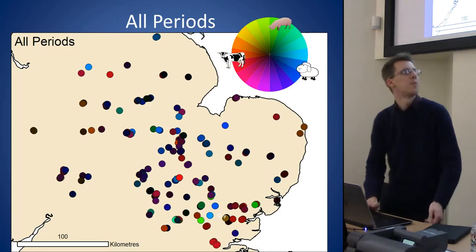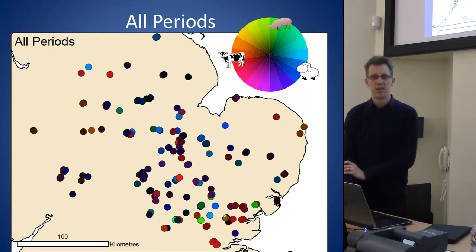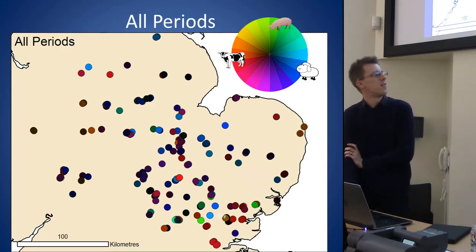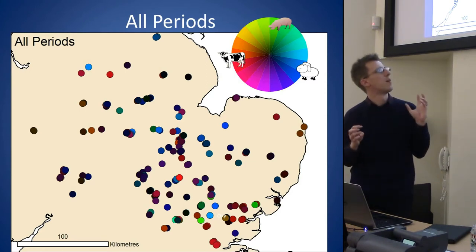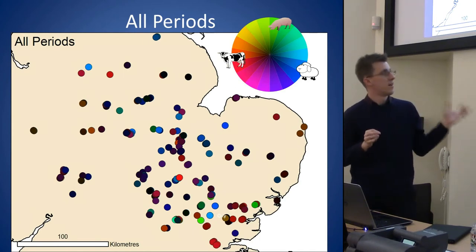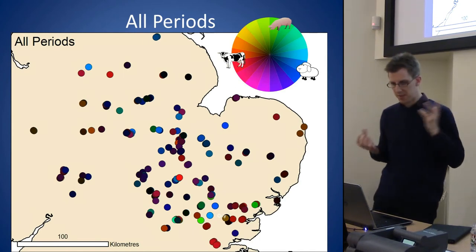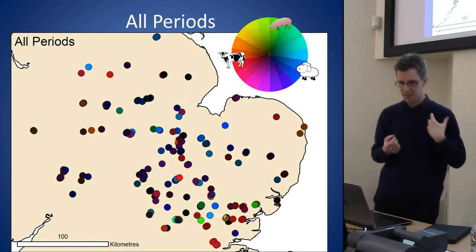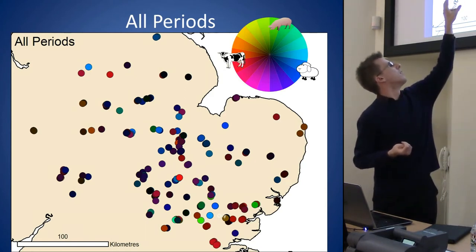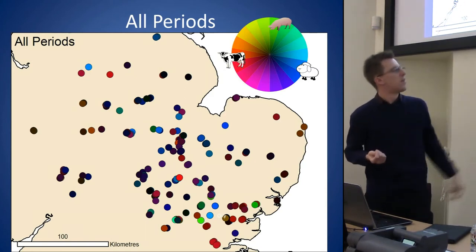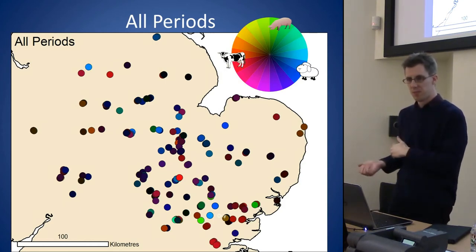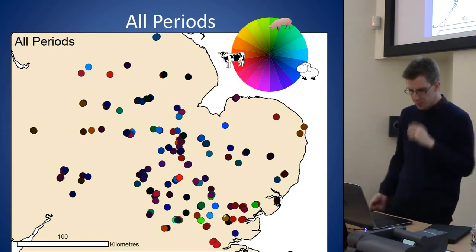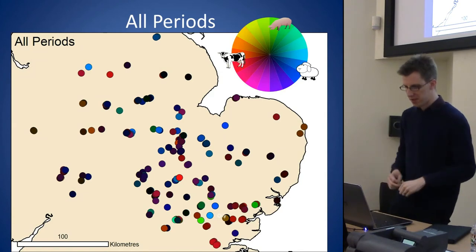That's what happens when I plot the 249 assemblages with the colours they come out with. It comes out as a bit of a mess to start off with: you can see some patterns, there's quite a bit of blue in the middle, and down towards the bottom there's some red showing more cattle towards the south, more sheep in the middle — but it's difficult to sort out.